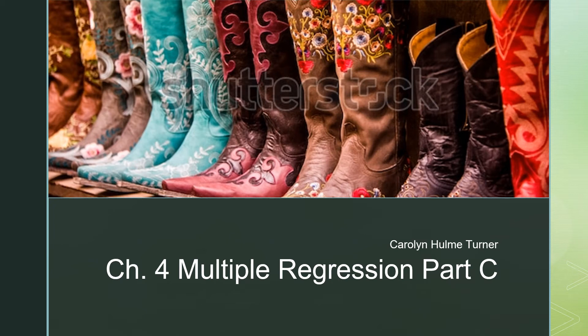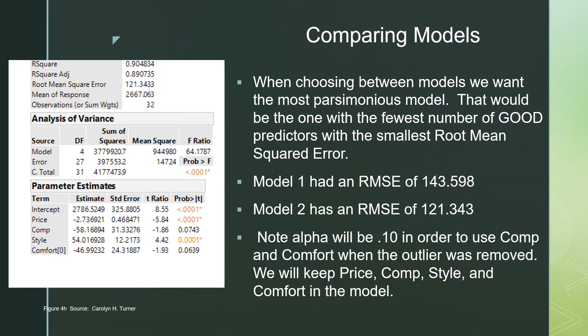Let's begin Part C of Chapter 4. When we look at the output, the summary fit is on top, where we have an R-squared of 90.48%, then the root mean squared error underneath, R-squared adjusted, the mean response value, and the number of samples. We had 32 observations in this data.